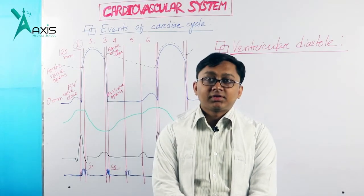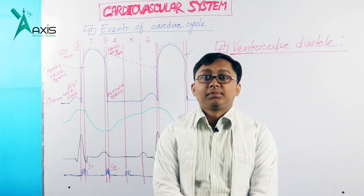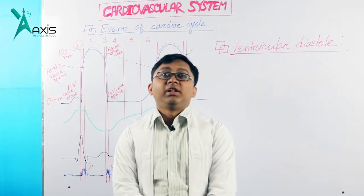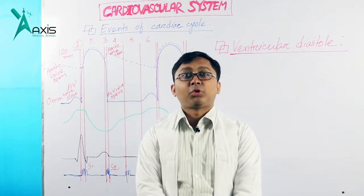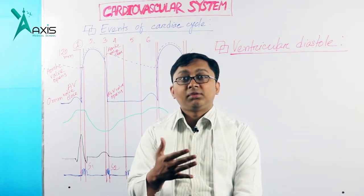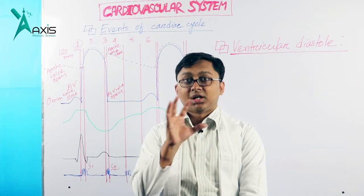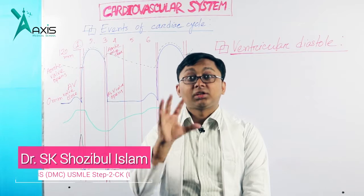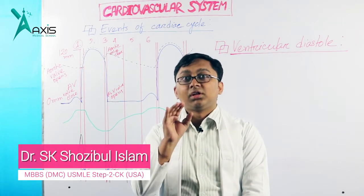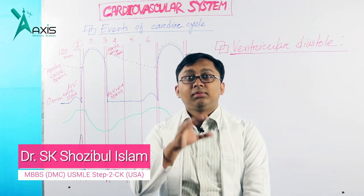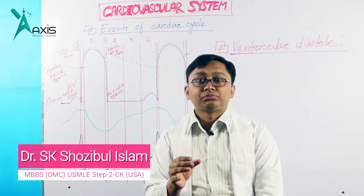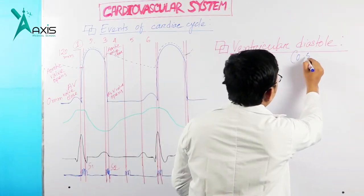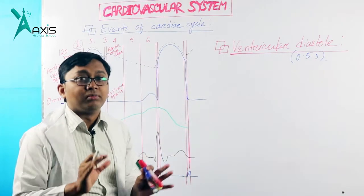We will discuss the pressure changes during ventricular diastole. During ventricular systole, the duration was 0.3 seconds, so the remaining 0.5 seconds is the ventricular diastole, because the total cardiac cycle duration is 0.8 seconds. So ventricular diastole is 0.5 seconds.